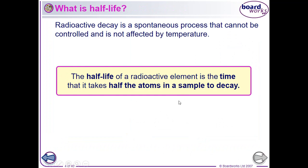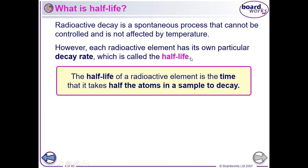Half-life is the amount of time it takes for half the atoms in a sample to decay. Radioactive decay is spontaneous — we cannot control it, we can't make it happen. The only thing we can do is calculate the probability of it happening. Each element has its own rate of decay, called the probability of decay, and that's linked to the half-life — the time it takes for half of the atoms to decay.